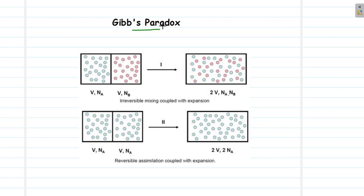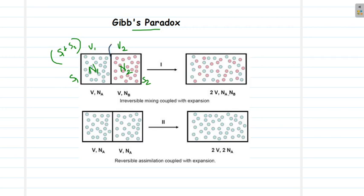Let us study the problem. Consider a box that is separated into two compartments. The volume of the first compartment is V1 and that of the second compartment is V2. Inside the first compartment we have one type of gas with N1 molecules, and in the second compartment we have another kind of gas with N2 molecules. The entropy of the first compartment is S1 and the entropy of the second compartment is S2.